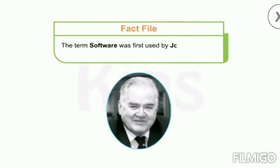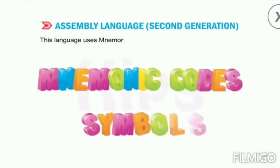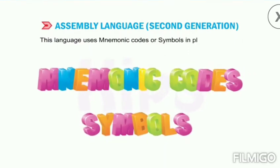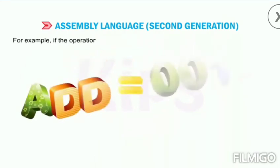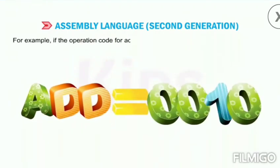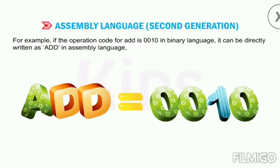The term software was first used by John W. Tukey in 1957. Now let me tell you about assembly language, the second generation language. This language uses mnemonic codes or symbols in place of 0 and 1. For example, if the operation code for add is 0010 in binary language, it can be directly written as ADD in assembly language.